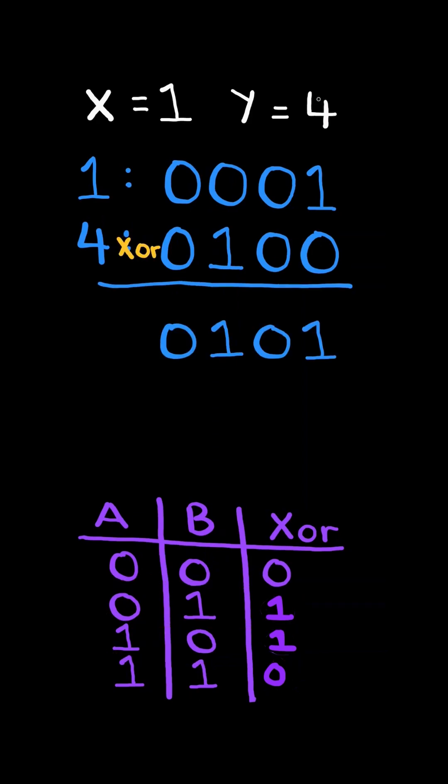If we apply the XOR operation to integers x and y, the number of 1 bits in the result represents the Hamming distance—in other words, the number of bits they differ.